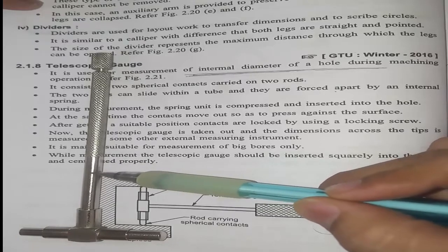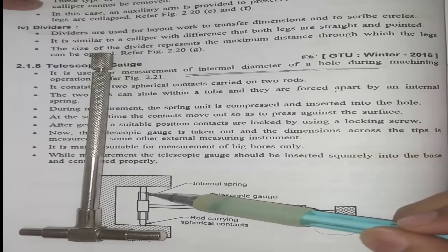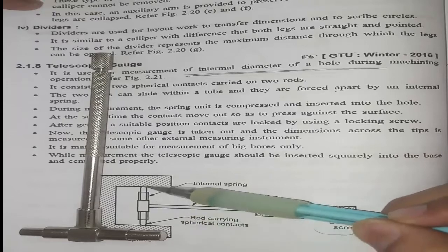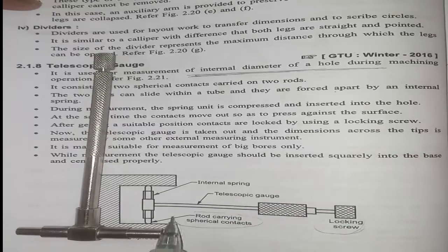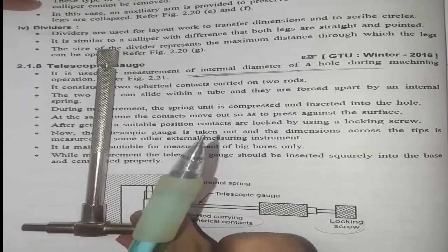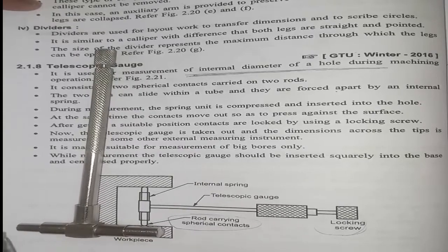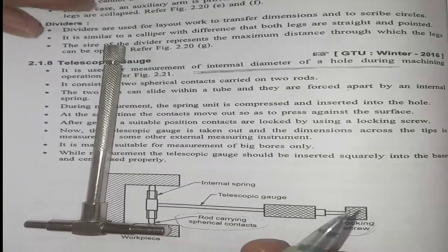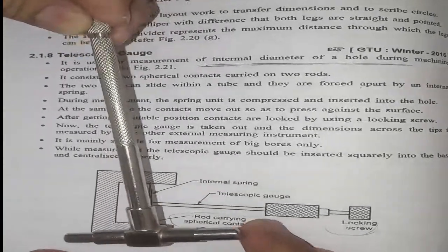This is a telescopic gauge and two rods are provided here. The rods carry spherical contacts. Here are the two rods, one and two. If you see these two rods, they are connected with a spring, so they are movable.